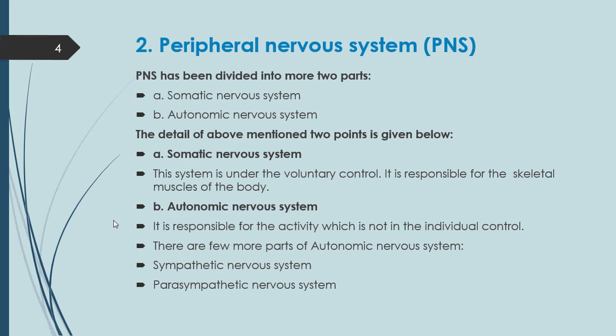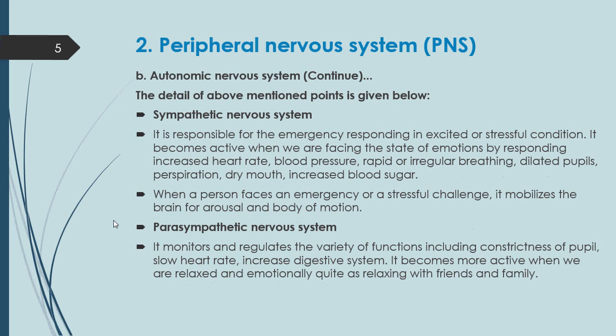The Autonomic Nervous System is further divided into parts. Number one: the Sympathetic Nervous System. Number two: the Parasympathetic Nervous System. The Sympathetic Nervous System is responsible for emergency responding in excited or stressful conditions — it responds when a person is in an emergency or stressful state.